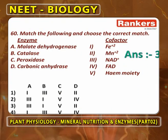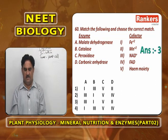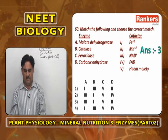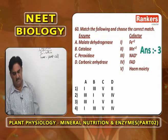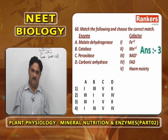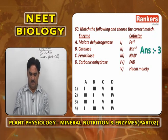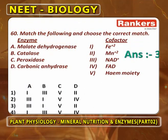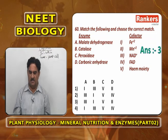For the matching of malate dehydrogenase, catalase, peroxidase, and carbonic anhydrase with their cofactors: malate dehydrogenase uses NAD+ — it removes hydrogen from malic acid and adds it to form NADH2. Catalase is activated by iron. Peroxidase has a heme moiety. Carbonic anhydrase uses zinc. So the answer is A3 (NAD+), B-iron, C-heme moiety, D-zinc. Answer is option 3.